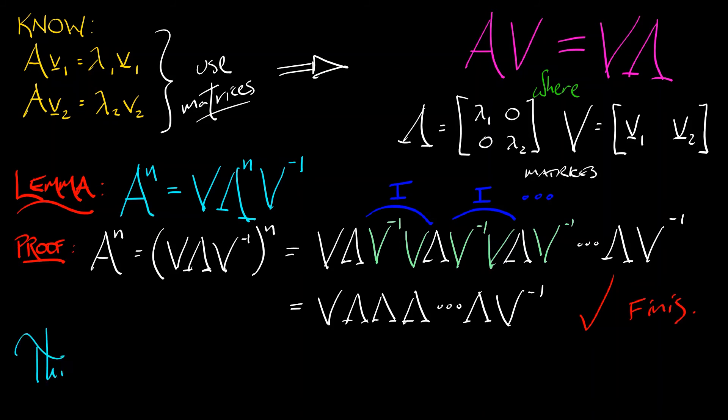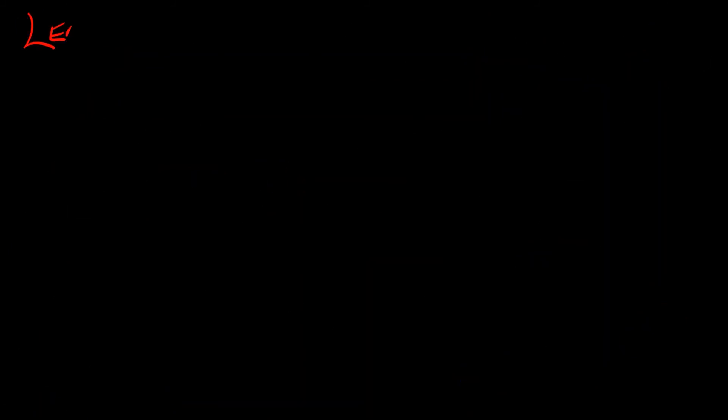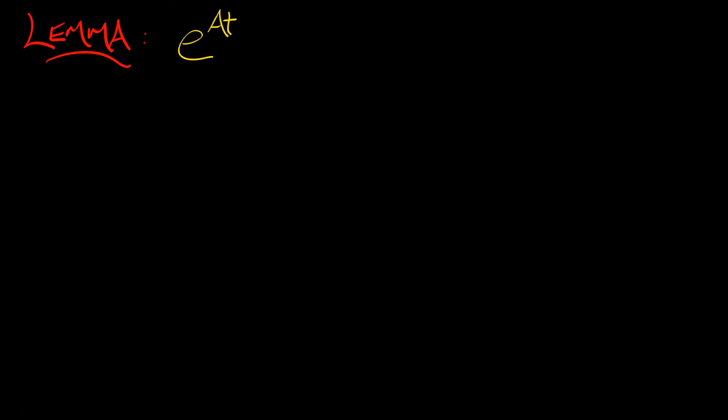Now, this explicitly solves the linear system in discrete time E x equals A x in this nice case where we have real distinct eigenvalues. Let's keep going. In this same case, we have the lemma that e to the AT, the matrix exponential, is V e to the lambda T V inverse. And e to the lambda T, lambda is diagonal. We can compute that. How do we prove this? It's going to be basically the same idea.